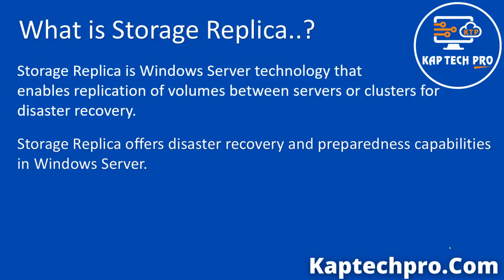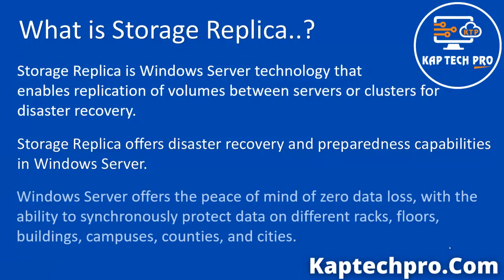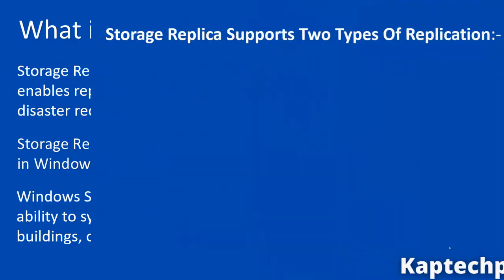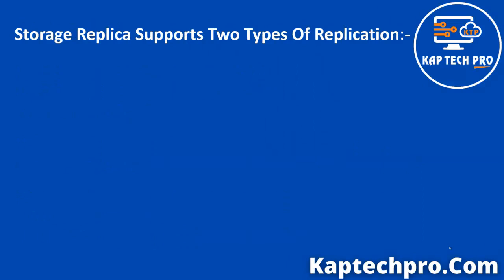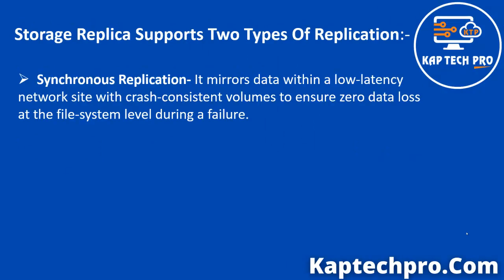Storage Replica offers disaster recovery and preparedness capabilities in Windows Server. Windows Server offers the peace of mind of zero data loss with the ability to synchronously protect data on different racks, floors, buildings, campuses, countries, and cities. Storage Replica supports two types of replication. First is Synchronous Replication, which mirrors data within a low latency network site with crash-consistent volumes to ensure zero data loss at the file system level during a failure.